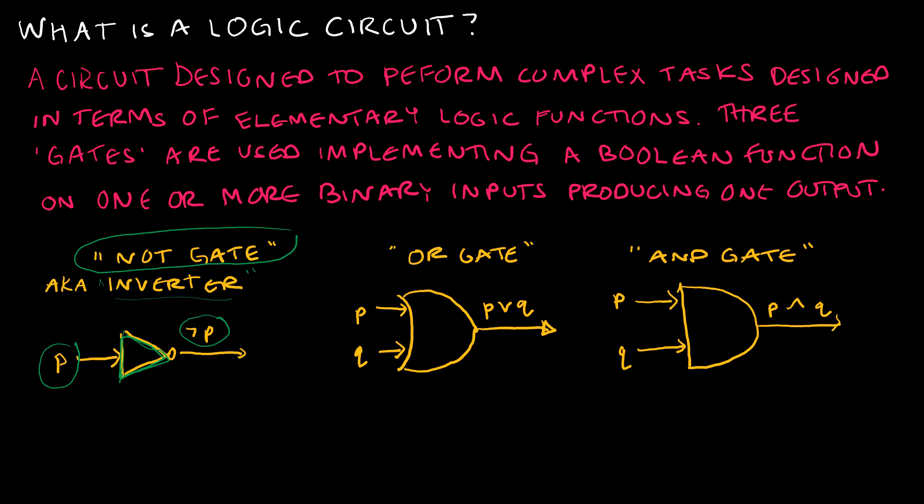Then we have the OR gate. The OR gate is going to take two inputs and the output is going to be the disjunction of those two inputs. And then, of course, we have the last one, which is the AND gate.